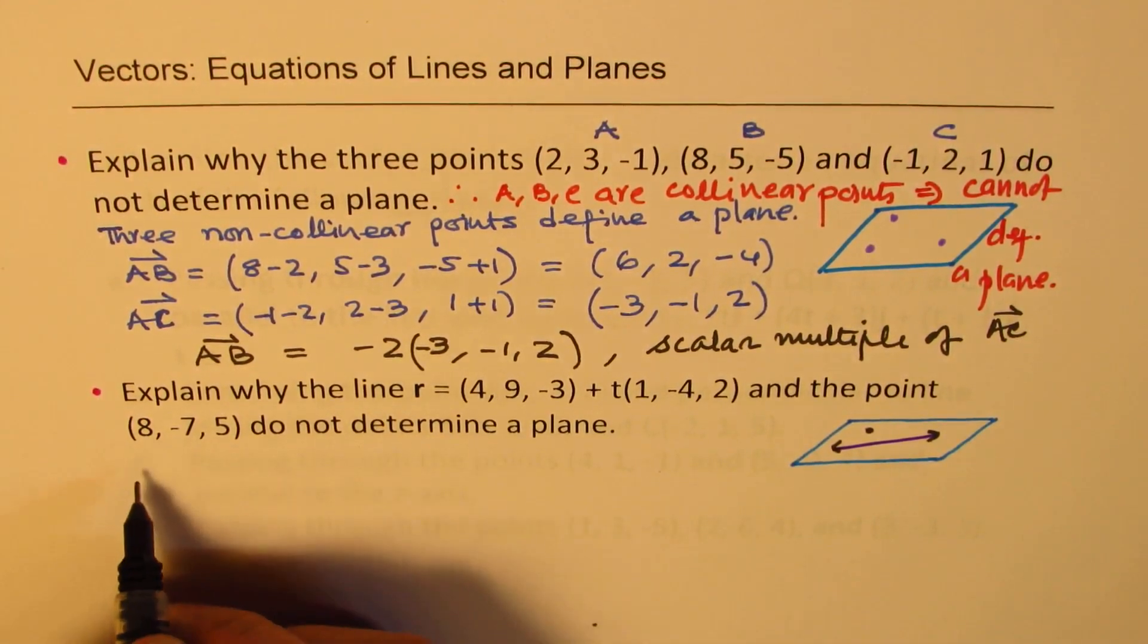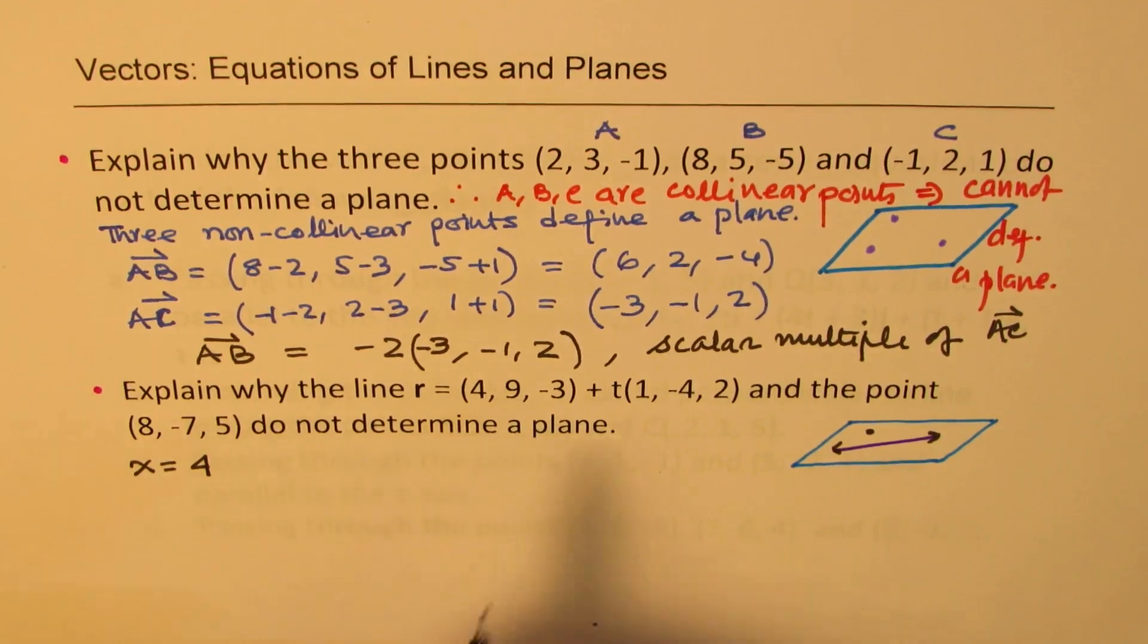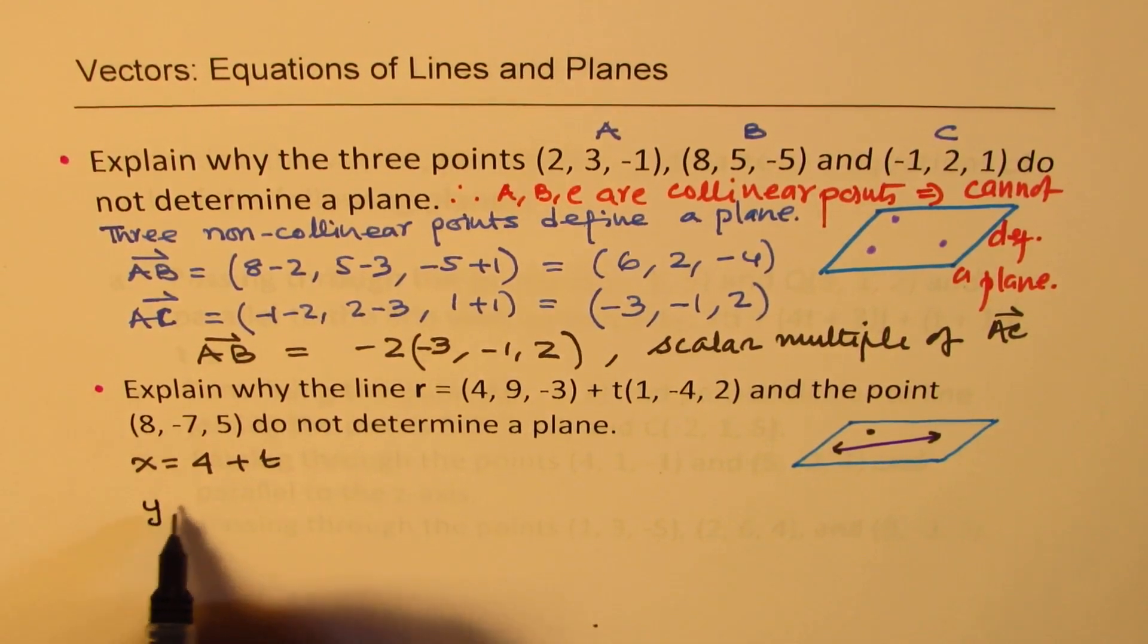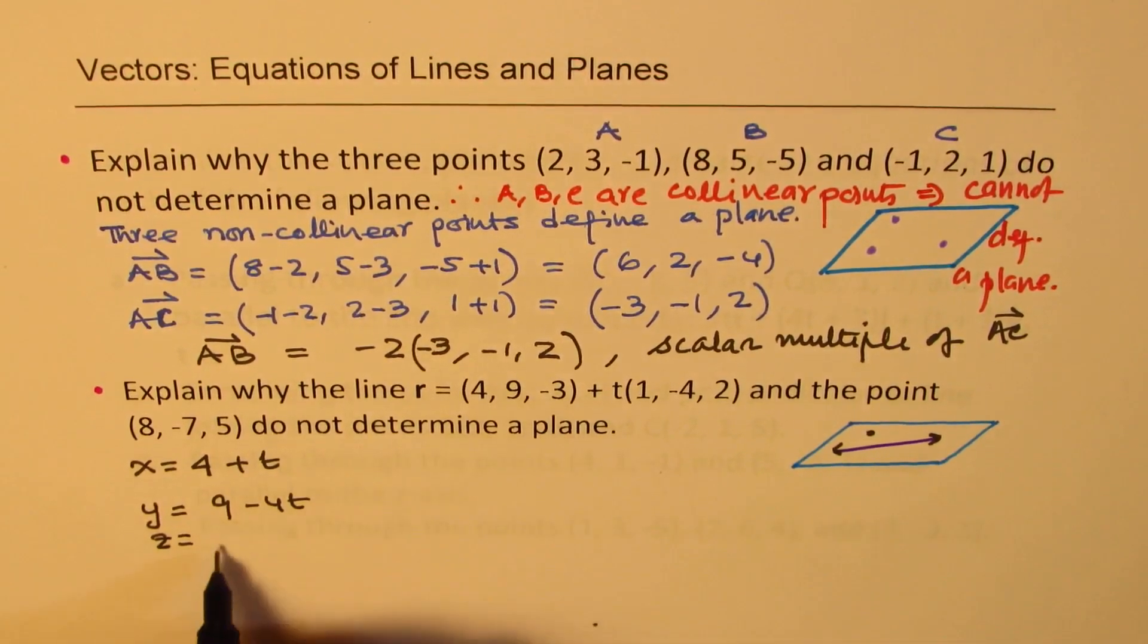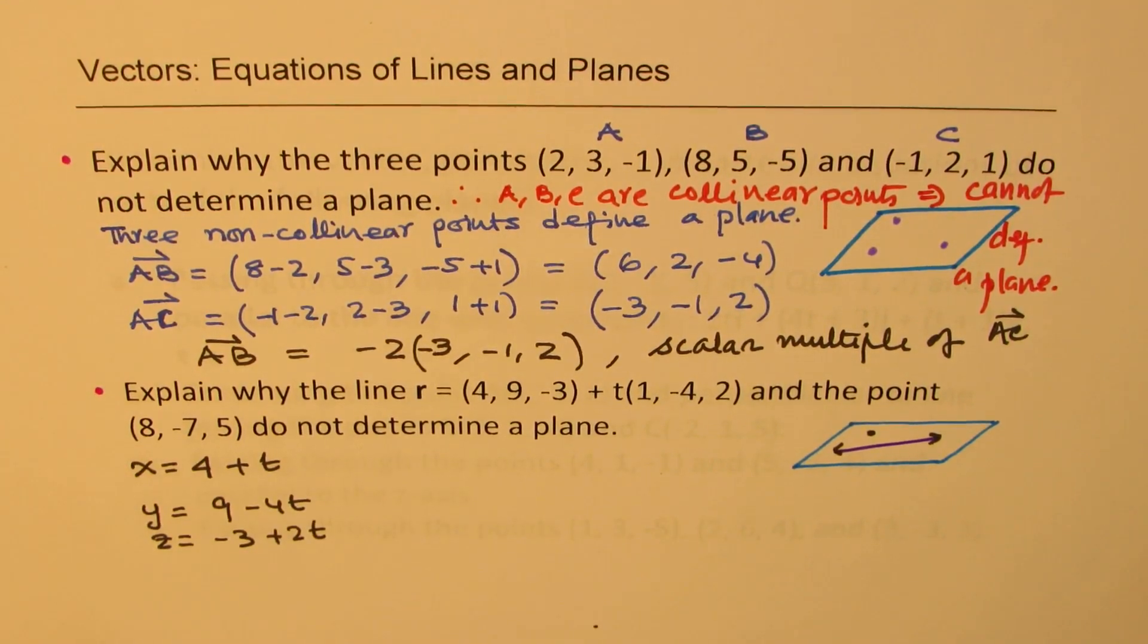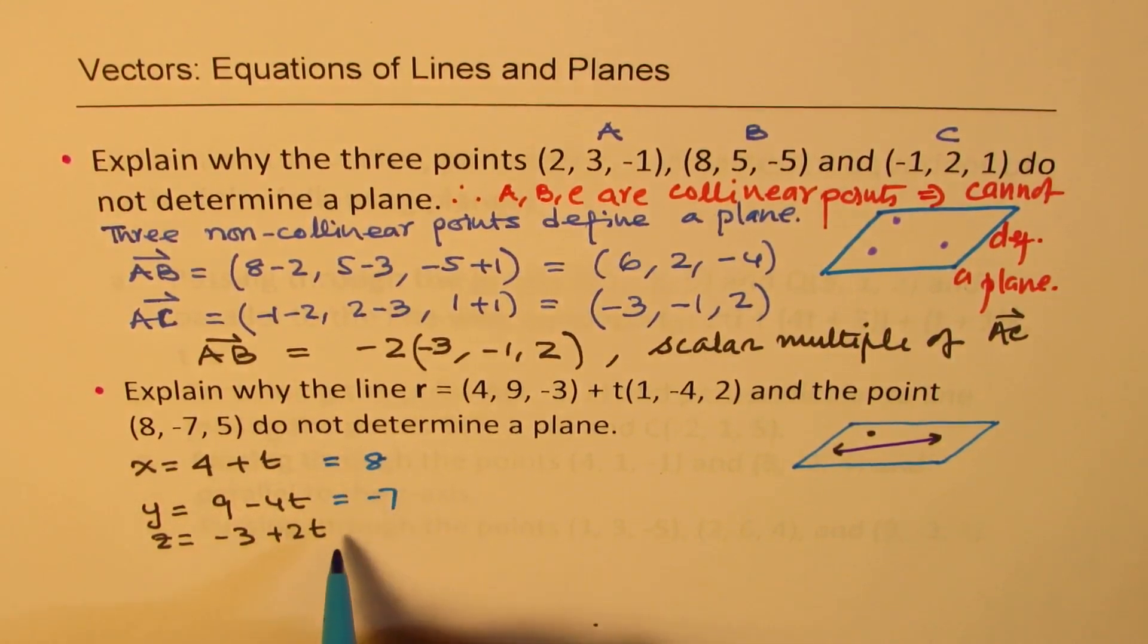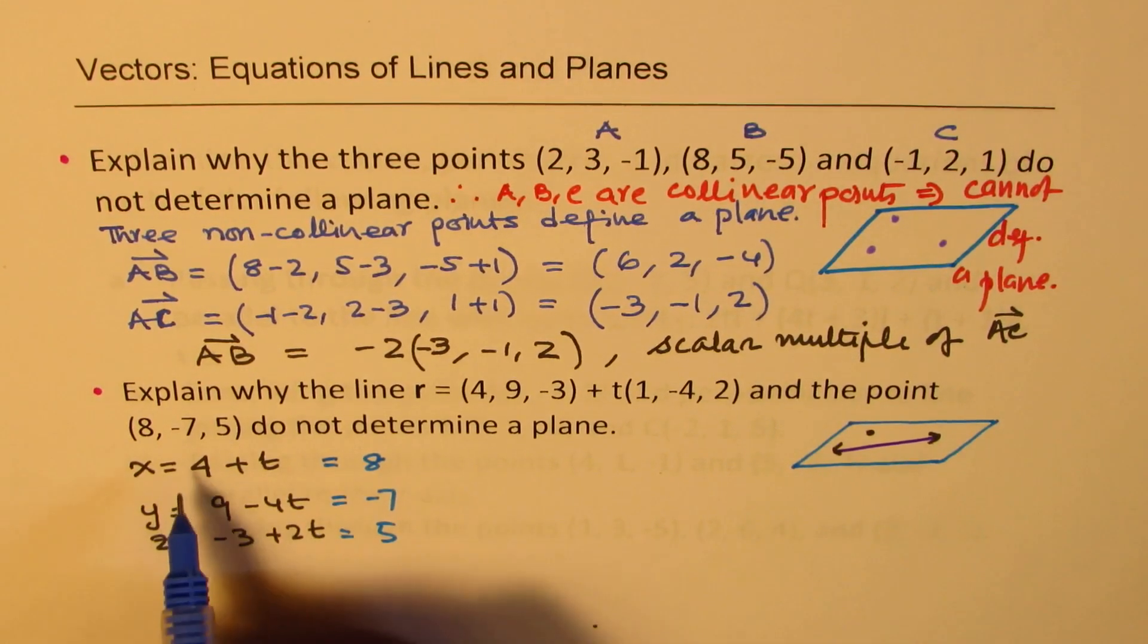So let's again try to prove it as we did in the last case. We'll write this equation in parametric form. So we can say that the equation is x equals to 4 + t, y equals to 9 - 4t and z equals to -3 + 2t. Now we are given the point which is (8, -7, 5). So again, I'm not rewriting this equation. I'm writing this as equal to 8, this as equal to -7, this as equal to 5. We are just checking if the point is on the line or not.